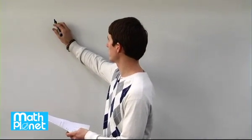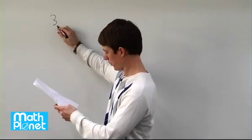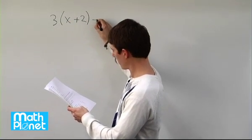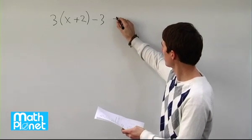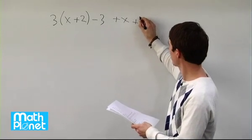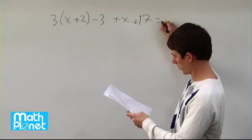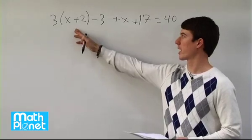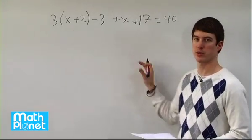Here we have a complicated algebraic equation that we want to solve: 3 times the quantity x plus 2 minus 3 plus x plus 17 equals 40. We want to solve for x to get something like x equals some number.